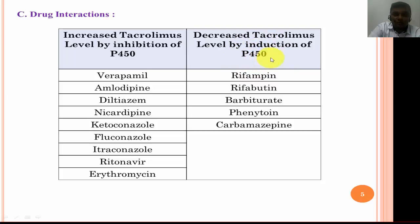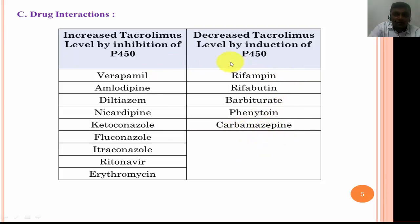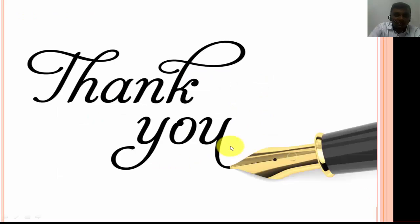Apart from inhibitors, some drugs can induce CYP450, thereby decreasing tacrolimus levels and leading to under-dosing. Drugs that induce CYP450 include rifampicin, rifabutin, barbiturates, phenytoin, and carbamazepine. Persons taking tacrolimus for solid organ transplant should be careful while taking these drugs. Thank you for your patient listening, and have a nice time.